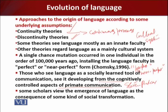Transcending the continuity versus discontinuity divide, some scholars view the emergence of language as the consequence of some kind of social transformation — that by generating an unprecedented level of public trust, this liberated genetic potentials for linguistic creativity, which is an important and dominant part of the evolution.